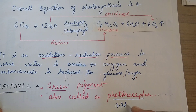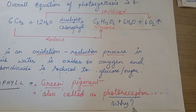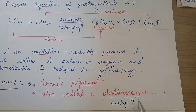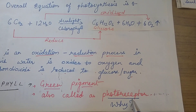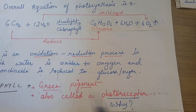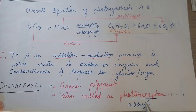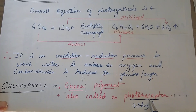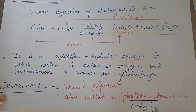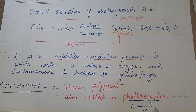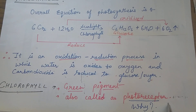Why is it called a photoreceptor? Because it captures or receives light. Chlorophyll is the only component present in plants which receives light, and because of it the photosynthesis process can proceed.